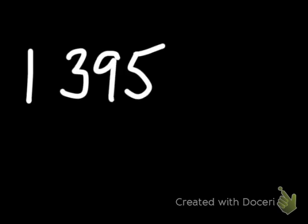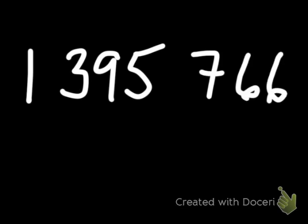What's great about the rules of divisibility is that you can determine whether 2 or certain numbers are divisible into very large numbers. Here's a very large number: 1,395,766. I know that 2 is divisible into that number because I just look at that last digit and it tells me that it is an even number.